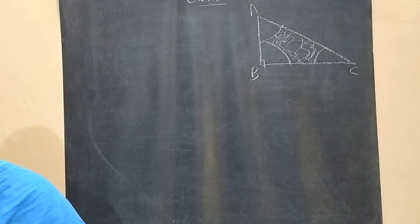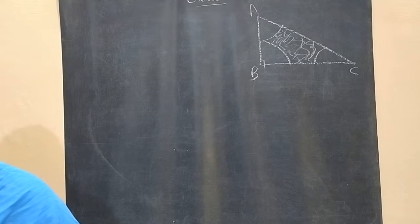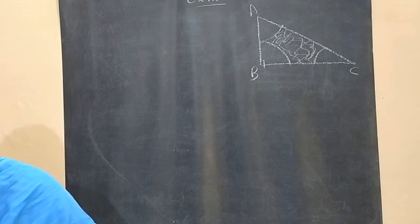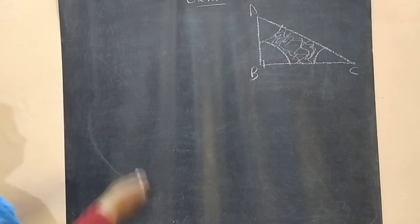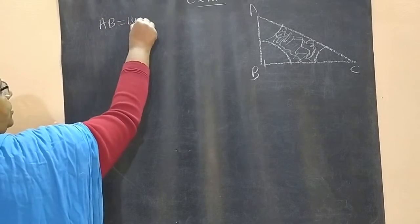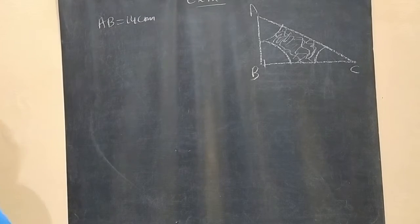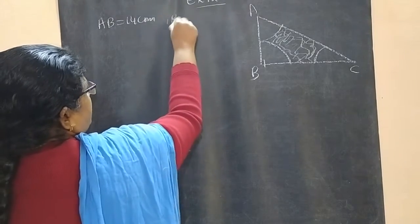ABC is a triangle right angled at B, with AB equal to 14 cm, and BC equal to 24 cm.